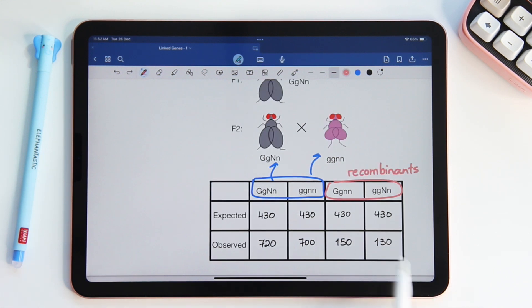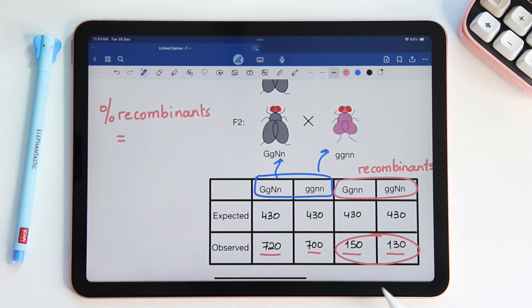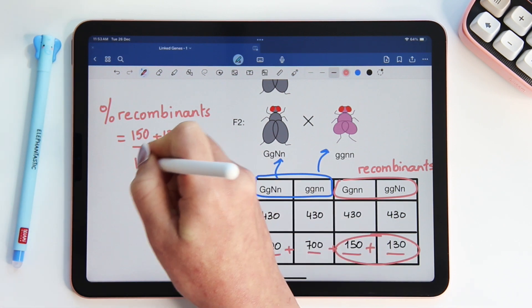Let's calculate the frequency of the recombinants, meaning, out of all the flies, what is the percentage of flies that have recombinant phenotypes. To do that, we first need to add the numbers of flies that are recombinant. That's 150 plus 130. Now, we divide this number by the total number of flies. So that's 720 plus 700 plus 150 plus 130. And if we add all these numbers, we get 1,700.